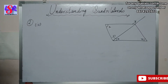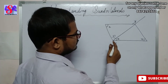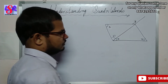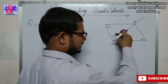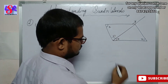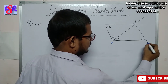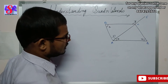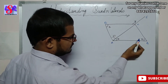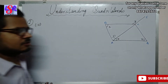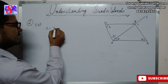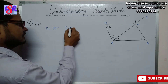Now let's move to the fourth part of question 2. Here we have a parallelogram with 67 degrees and 70 degrees given. Let us name the vertices A, B, C, D, and E. Z and 70 degrees are opposite angles of a parallelogram, so Z equals 70 degrees.